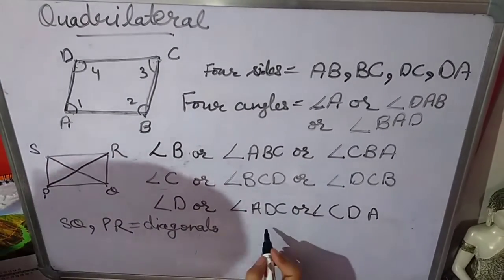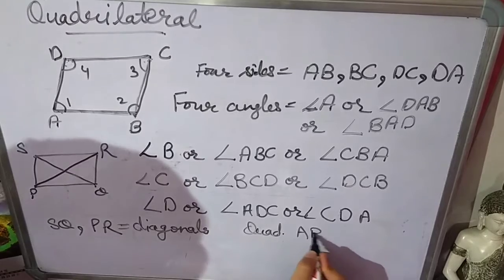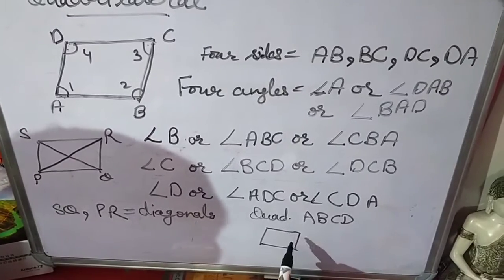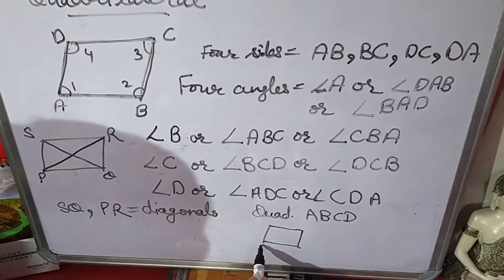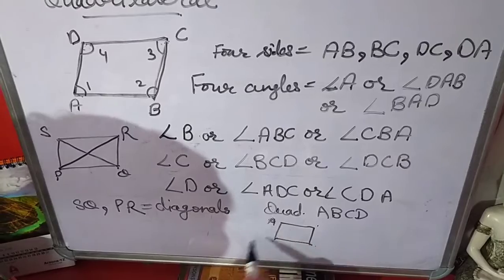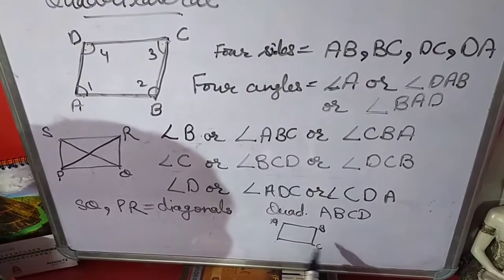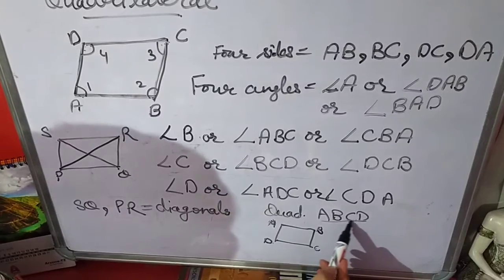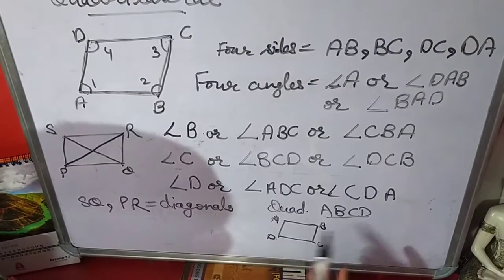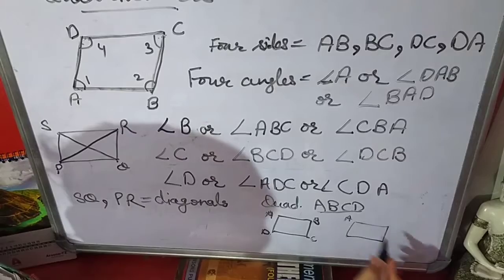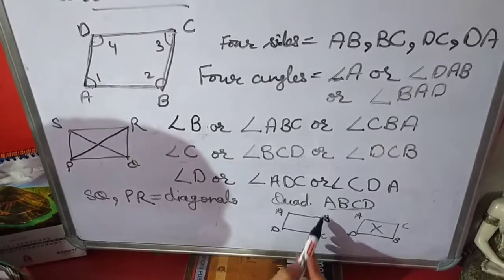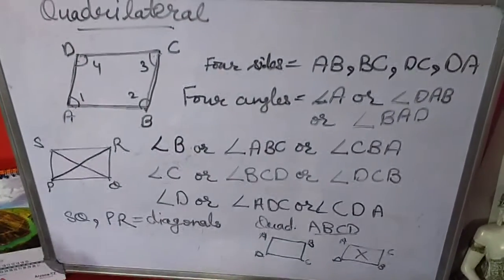Now one more important point. If quadrilateral ABCD is written and you have to draw this quadrilateral, you can start A from any corner. But these letters should be in sequence. If A, B, C, D is written, you have to write A, B, C, D in sequence order going around the shape. If you write them out of order, then this is wrong. You have to write these letters in sequential order.